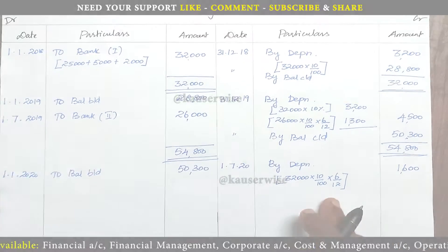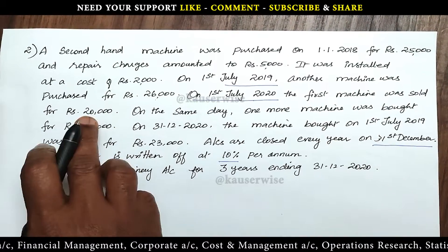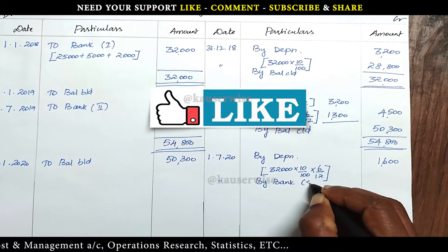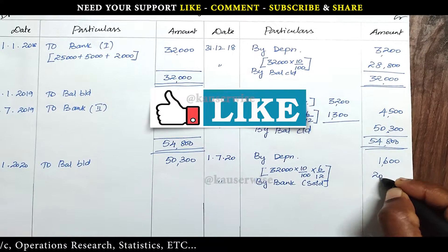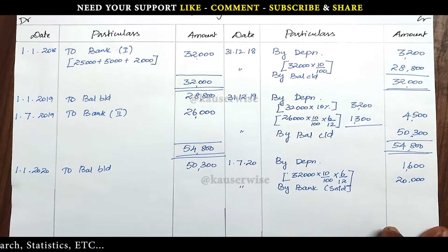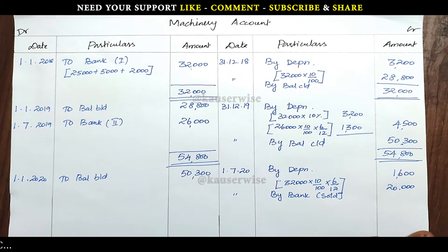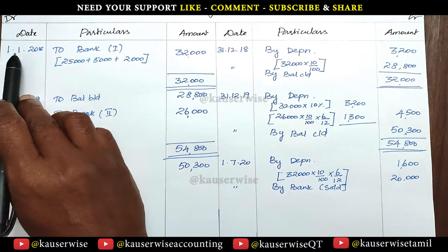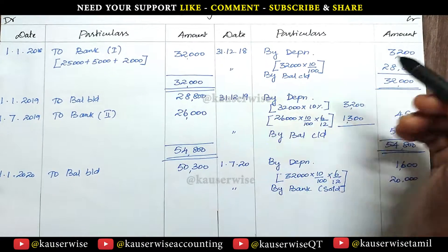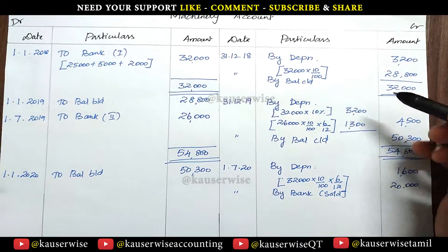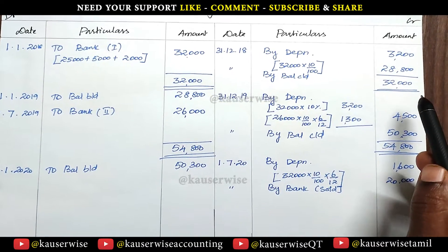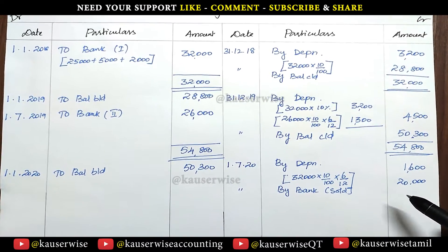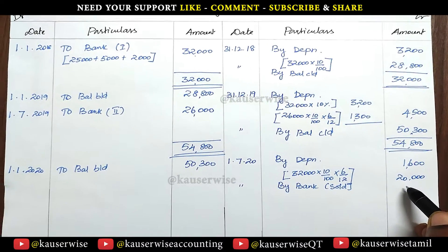The machine was sold for 20,000, so on the same day, by bank 20,000 — this is the entry for the sale of the asset. Now we have to calculate whether it is a profit or loss on sale. For that we do working note 1: purchase price 32,000, minus first year depreciation 3,200 equals balance 28,800, minus second year depreciation 3,200 equals 25,600.